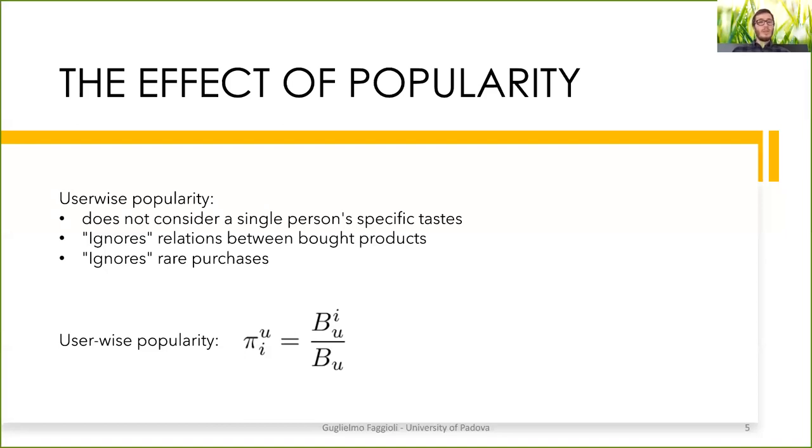So in this way we solve the problem of multi-task shopping and we can consider only what the user is actually buying. Finally, it ignores rare purchases. Let's say a user buy something because it's in discount or because she has a particular need and she won't buy such product again. If she doesn't buy it again, then the score will be likely very low and thus our results won't be affected by rare purchases.